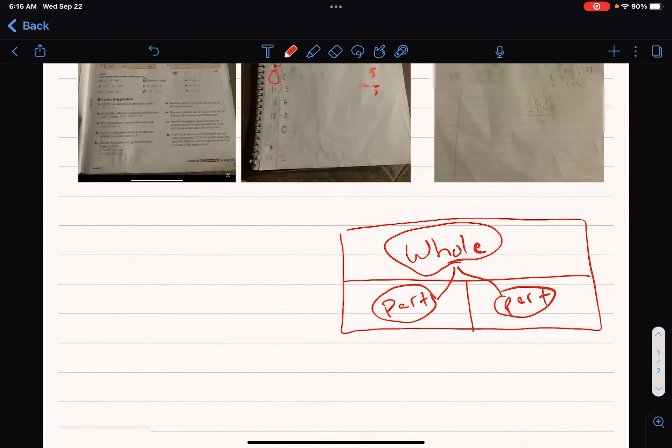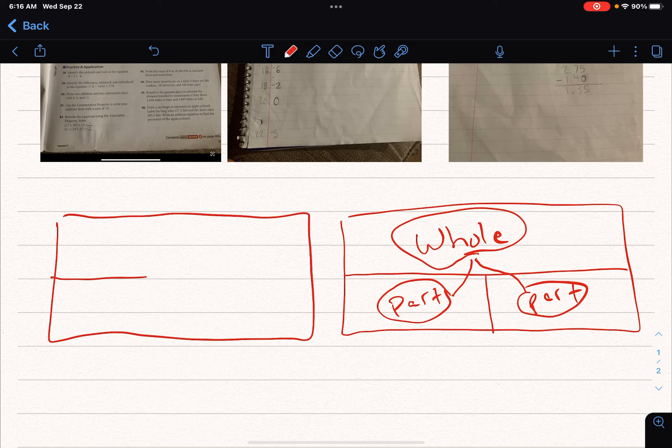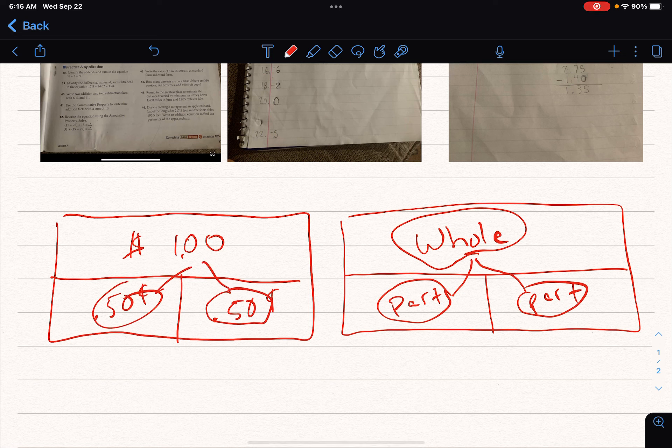So for example, if I were to do it like this, this is $1, right? What is my part? Well, part could be 50 cents and 50 cents. So both my 50 cents and my 50 cents equal my dollar because my dollar is my whole. It's the whole number.